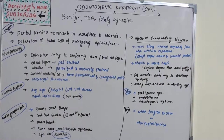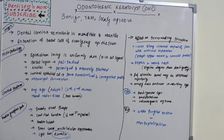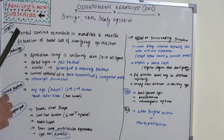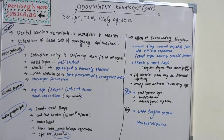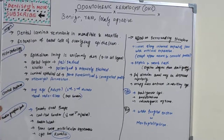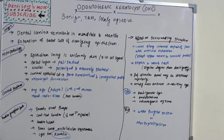Hello everyone, welcome back to a new session on dentistry and more. Today we have the odontogenic keratocyst, or OKC. We covered radicular cyst and dentigerous cyst in our last sessions, so the third one is the odontogenic keratocyst — a benign, not very common, and locally aggressive type of cyst. Now let's get into the details of OKC.